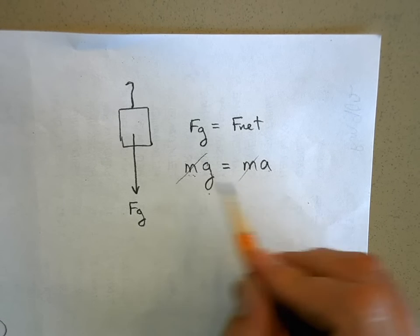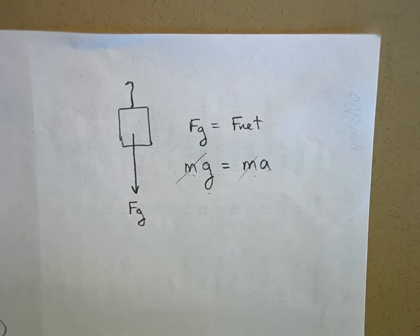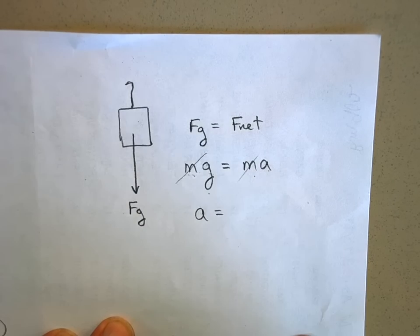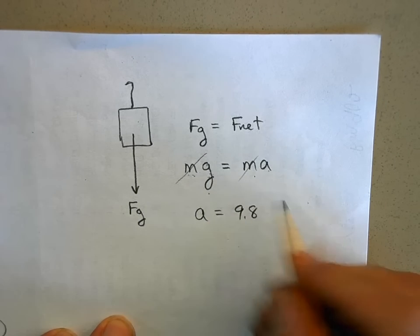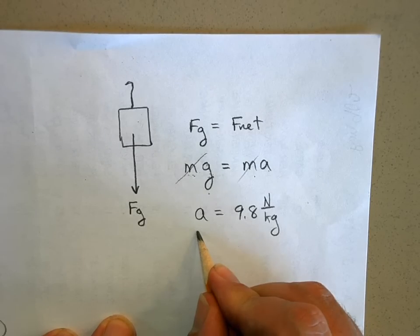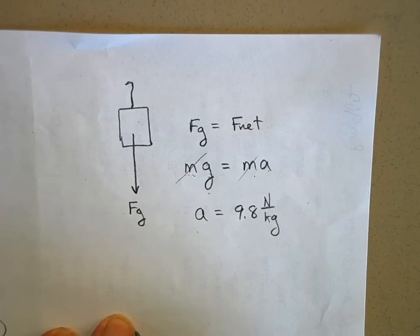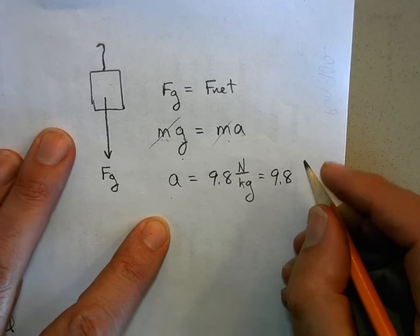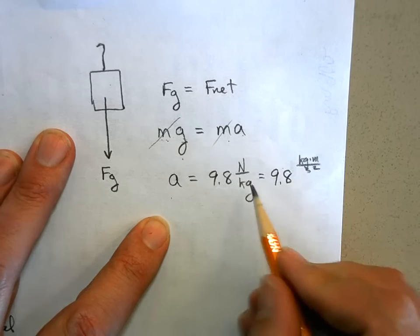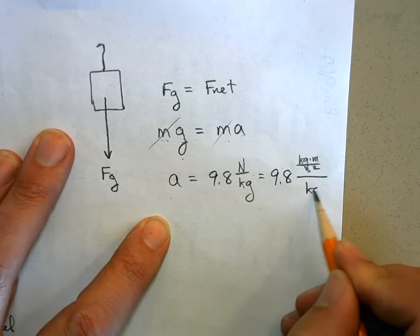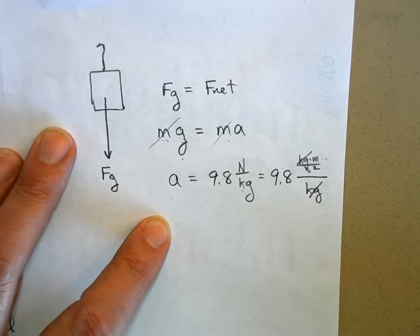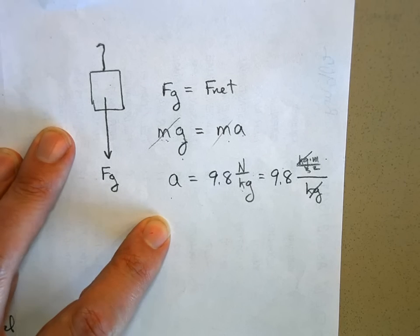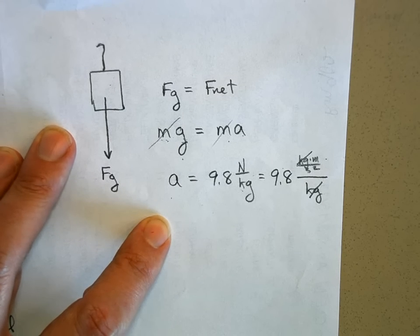The acceleration due to gravity equals 9.8, but g was measured in newtons per kilogram — so are the units compatible with meters per second squared for acceleration? One newton equals one kilogram·meter per second squared. Dividing by kilograms, the kilograms cancel and we're left with meters per second squared. So newtons per kilogram is equivalent to meters per second squared — they're the same thing.